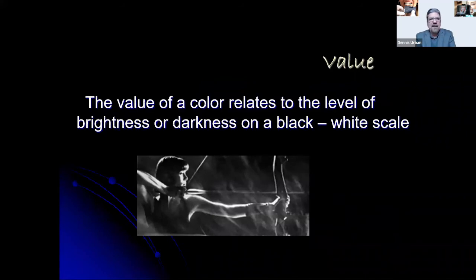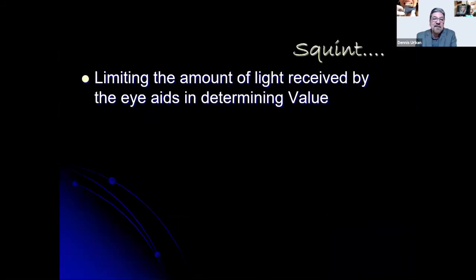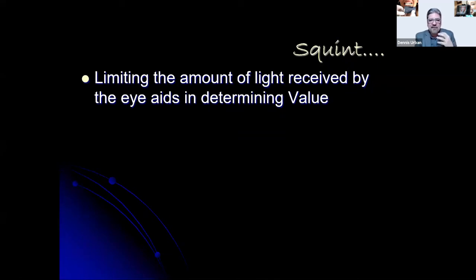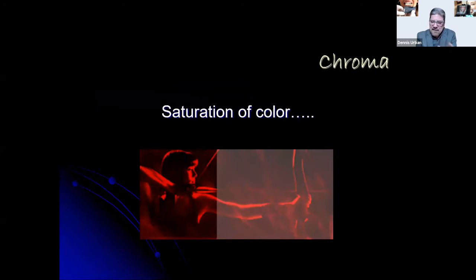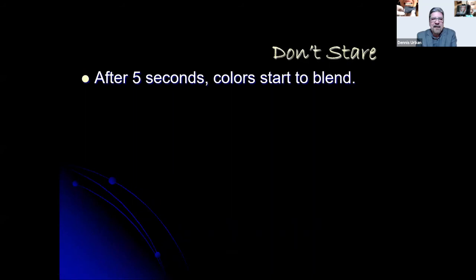Reviewing the key color dimensions: value is the darkness and brightness of a tooth — as shown on the color sphere, from light to dark. Squinting limits the amount of light perceived by the eyes, which aids in determining the value of the tooth. The three dimensions to assess are value, hue, and chroma — don't stare at the tooth too long while making this assessment.